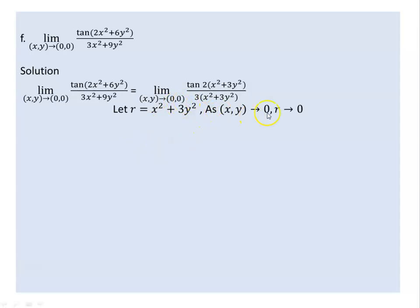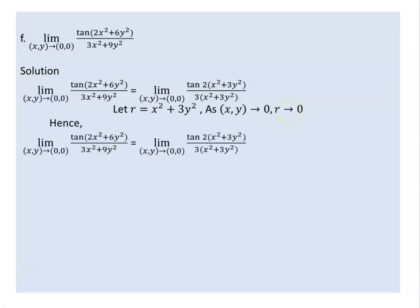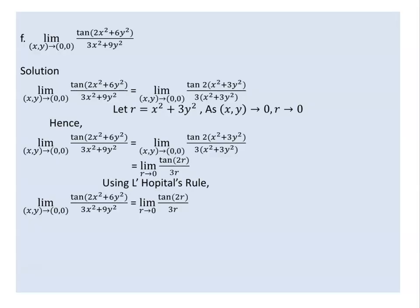As (x, y) approaches (0, 0), the expression simplifies. We can see how the limit is determined. The result is 2 divided by 3, so the limit equals 2/3.